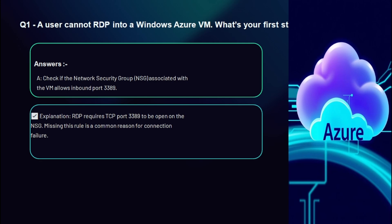To fix this issue, go to the Azure portal, navigate to the virtual machine's Networking option, and look at the NSG rules applied to the VM's network interface. Make sure there is an inbound rule that allows protocol TCP on port 3389, set with a priority lower than the default deny rule (i.e., 65500).